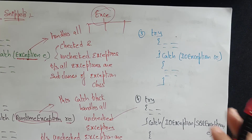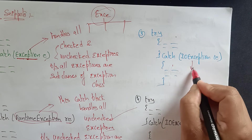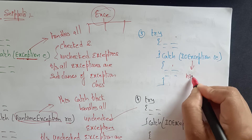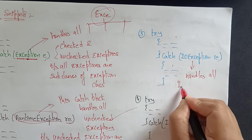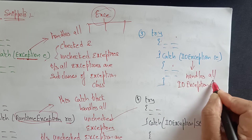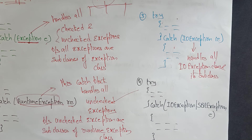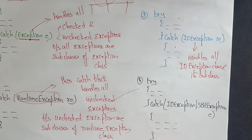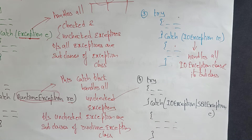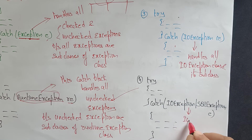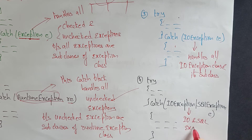Now, in the third snippet, we have a try block and a catch block with IOException. This catch block handles IOException and its subclasses. In the fourth snippet, we have a try block with catch handling both IOException and SQLException. You can include multiple exception classes in a single catch. This catch block is going to handle both IO as well as SQL exceptions.